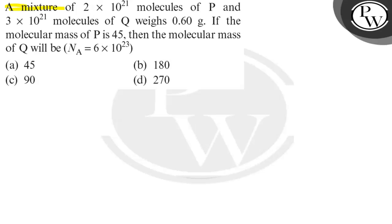Hello bacho, let us read the question. A mixture of 2 into 10 power 21 molecules of P and 3 into 10 power 21 molecules of Q weighs 0.60 grams. If the molecular mass of P is 45, then the molecular mass of Q will be? P and Q are given substances. P has 2 into 10 power 21 molecules, Q has 3 into 10 power 21 molecules, total weight is 0.6 grams, one molecular mass is given, and we have to find the other. Avogadro number is also given in brackets.